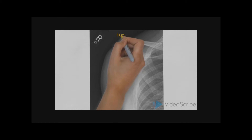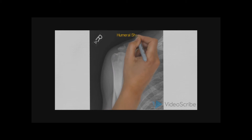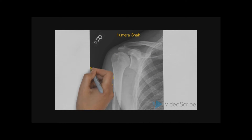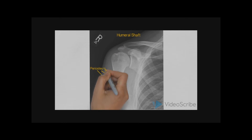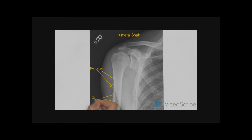When assessing the humeral shaft, we need to ensure that the soft tissue surrounding the diaphysis or shaft is continuous and has no pathological features. Then we assess the shaft for periosteal reactions. We ensure that the periosteum is continuous around the entire border of the humerus.